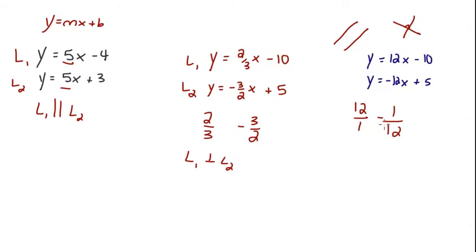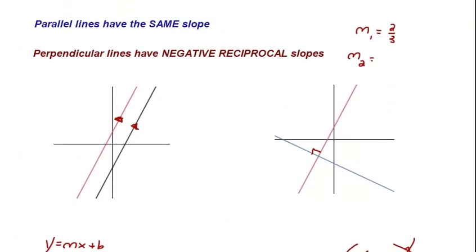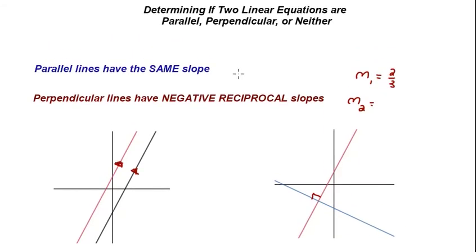So the first one we had parallel, perpendicular, and these last ones they were neither. There's no special relationship between those two slopes. Okay, so that's the main idea behind how we determine if two lines are parallel, perpendicular, or neither. We just look at the slope. If it's the same, the two lines are parallel. If the slopes are negative reciprocals of each other, then they are perpendicular.